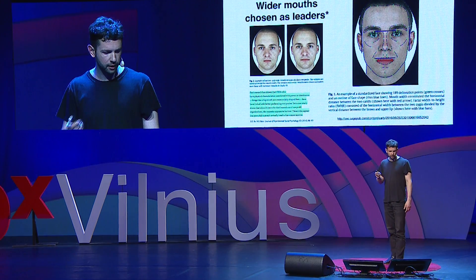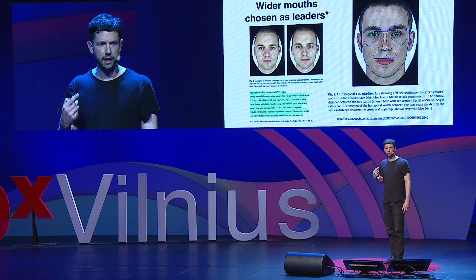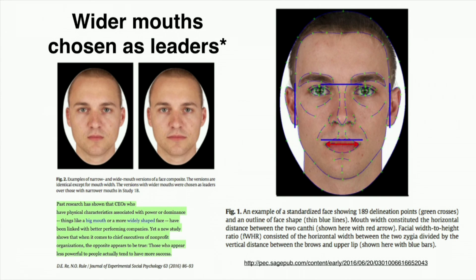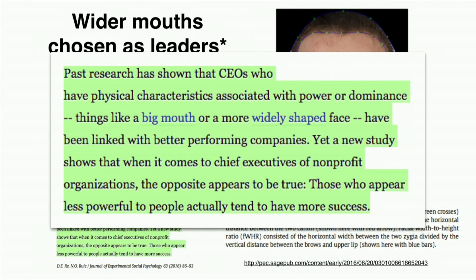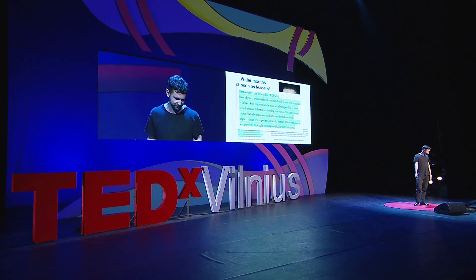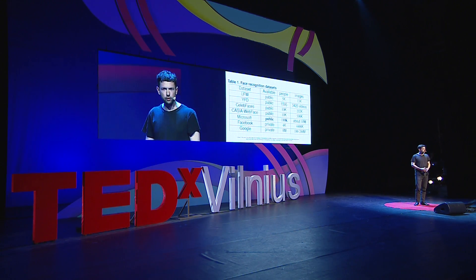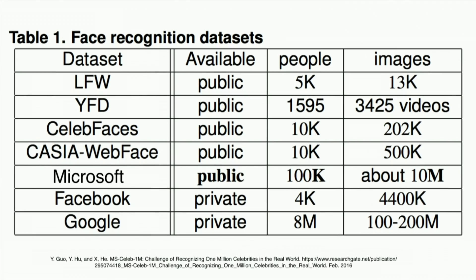Here's one using computer vision to look at whether someone is going to be a high-performing CEO based on the width of their mouth. But it's okay if you don't have a wide mouth, as long as you're interested in running an NGO — the opposite is true for non-profit agencies; a narrower mouth is good. These are just a few of many research papers that have come out in the last few years mining and inferring attributes from images appearing mostly on social media.